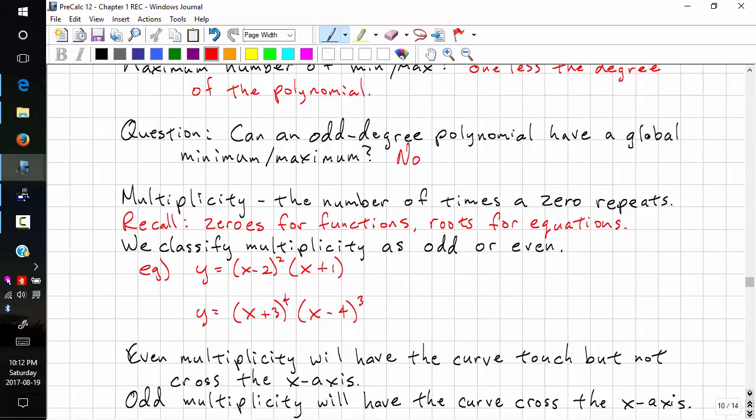But don't be confused if people interchange these two terms. We classify multiplicity as odd or even, based on the exponent.